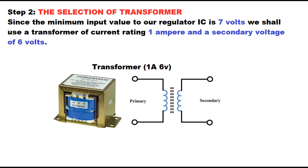Step 2: The selection of transformer. Since the minimum input value to our regulator IC is 7 volts, we shall use a transformer of current rating 1 ampere and a secondary voltage of 6 volts.